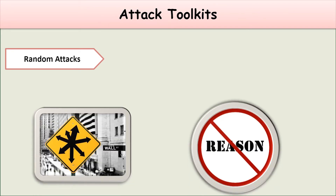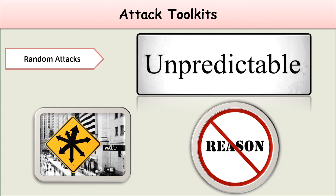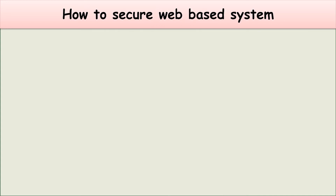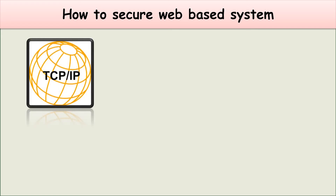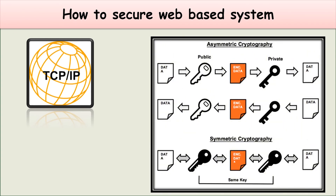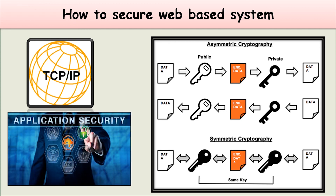After having seen how attacks happen on computers, the next thing for us to look at is how to secure a web-based system. These systems can be secured by: number one, a secure IP layer of the TCP/IP stack; number two, by using SSL or the Secure Socket Layer, or TLS, the Transport Layer Security protocols; number three, secure specific applications by using application-specific security.